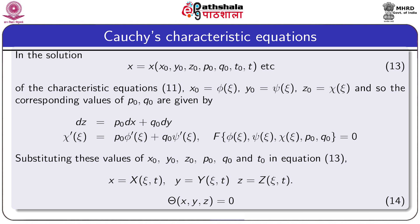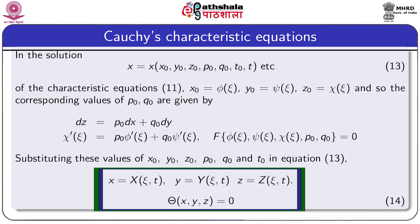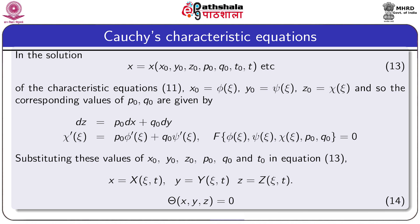Therefore x, y, z, p, q are all known in terms of ζ and t. Since x, y, z are functions of ζ and t, we have three relations involving two parameters ζ and t. Eliminating ζ and t from these three relations yields a functional relation Θ(x, y, z) = 0 (equation 14), which is the required general integral passing through the given curve γ.